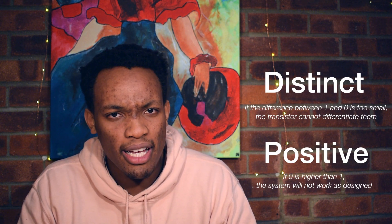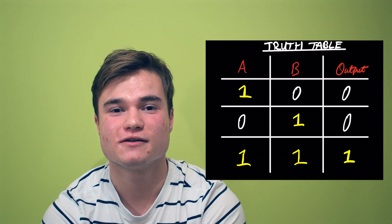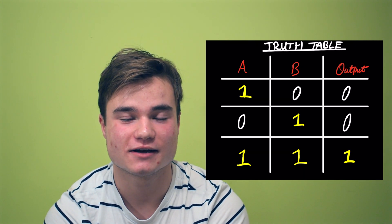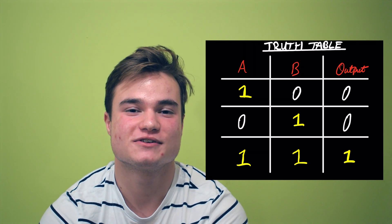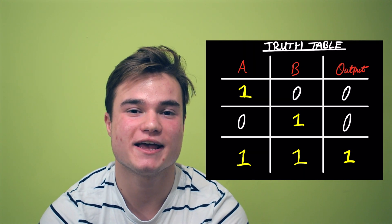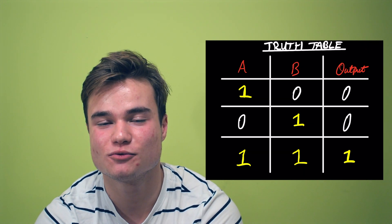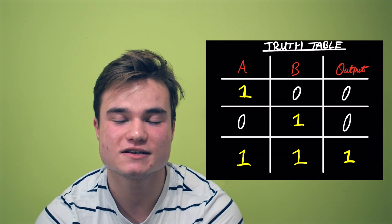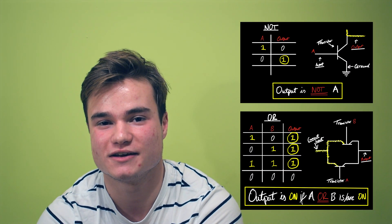It doesn't matter how high or low the voltage actually is, as long as the difference between them is distinct and positive to allow current to flow properly. The truth table will now look like this, where 1 AND 1 is equal to 1, and 1 AND 0 is equal to 0. This step is important for deciphering the output. Input A must be true, or 1, and input B must be true in order for the output to be true. This gate is therefore called an AND gate, and you can apply the same logic to the other truth tables.